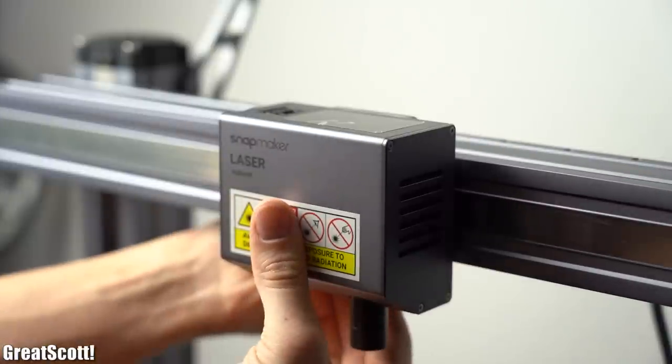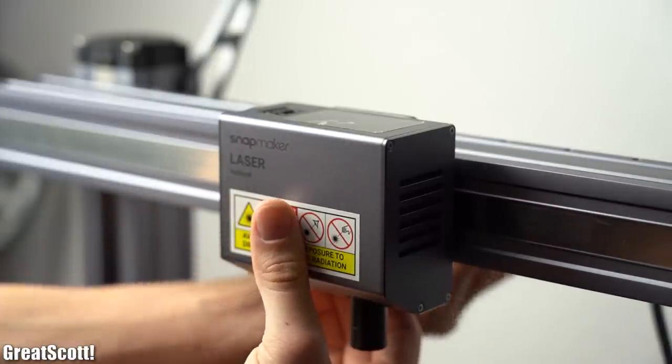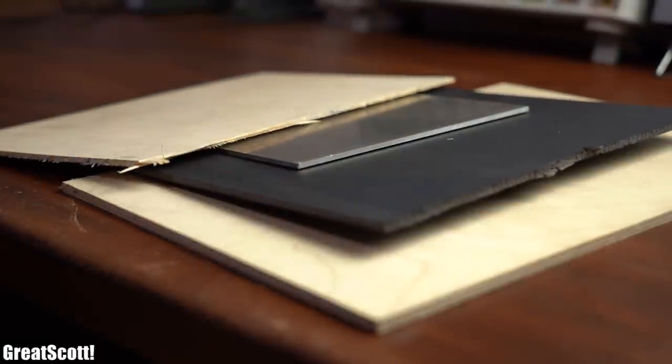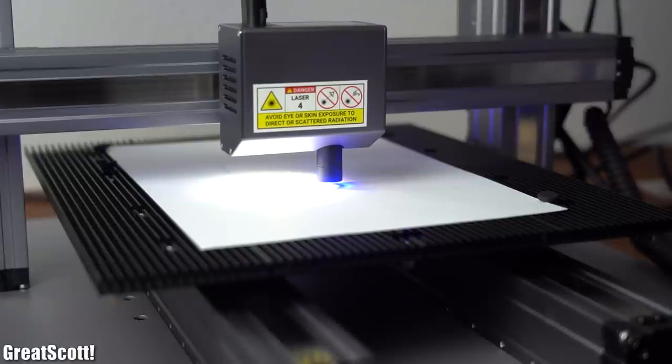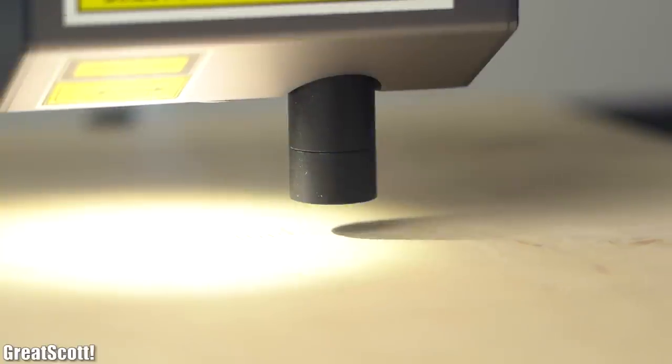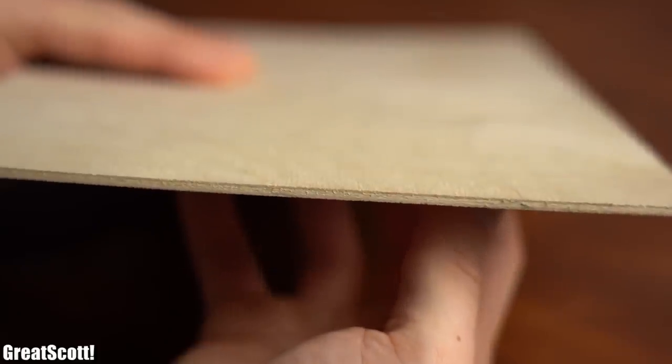And with that being said it was time to move on to the laser engraving and cutting for which I got myself a few different materials to test. Before that though I did a pretty straight forward camera calibration followed by a laser focus calibration onto my work piece which was 3mm thick plywood.